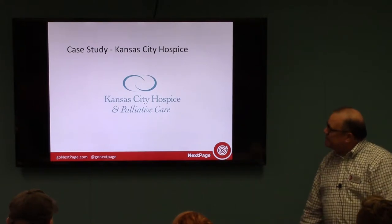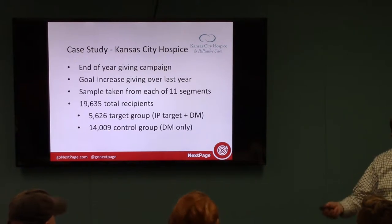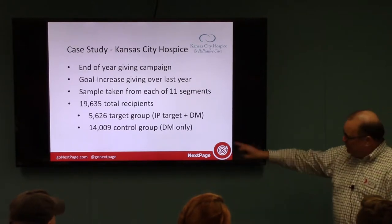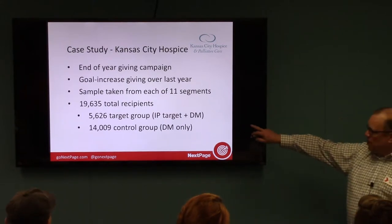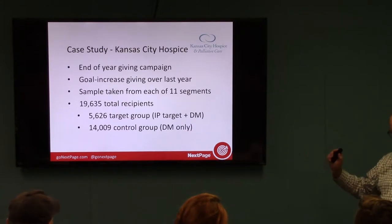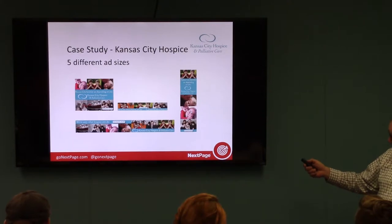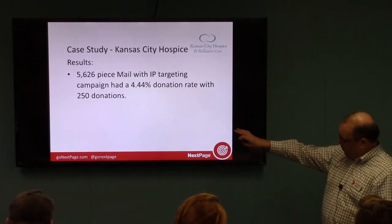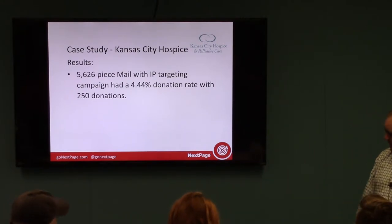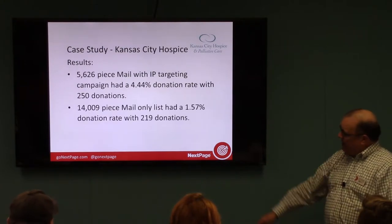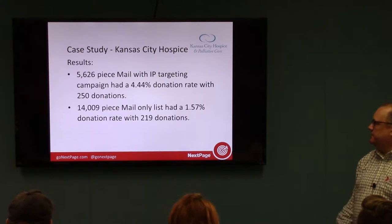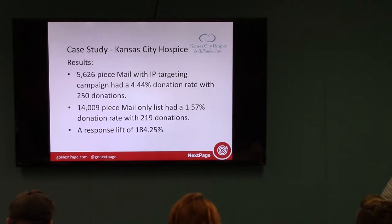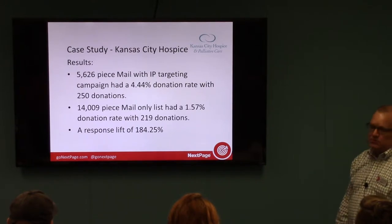We did a case study with Kansas City Hospice for their end-of-year giving campaign. They had 11 segments and nearly 20,000 total recipients. About a quarter were the target group with IP targeting and direct mail; three-quarters were direct mail only. They ran five different ads. Of the 5,600-piece target group, there was a 4.4% donation rate with 250 donations, while the control group had a 1.57% rate with 219 donations — meaning the smaller target group actually generated more donations. That's a response lift of 184%, and Kansas City Hospice was very happy.